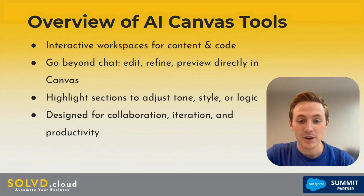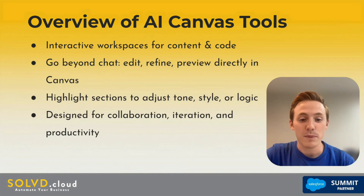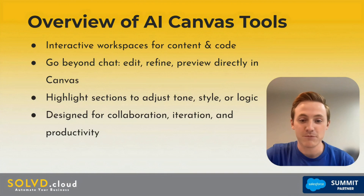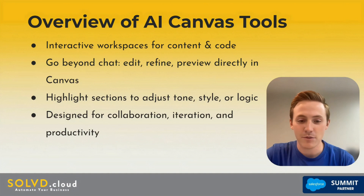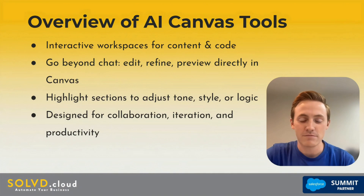Canvas tools, especially in ChatGPT and Gemini, are interactive workspaces — especially good for content, drafting emails, and coding. It goes beyond just going back and forth with the chatbot. You can edit, refine, and preview exactly what you need right in the Canvas itself. You can adjust different tones, styles, and lengths of a document or email. It's especially designed for collaboration, productivity, and efficiency.